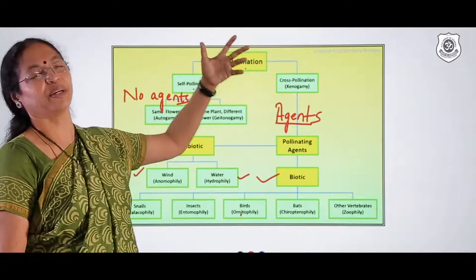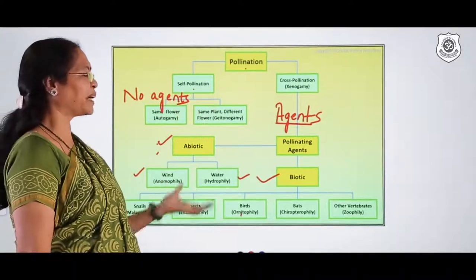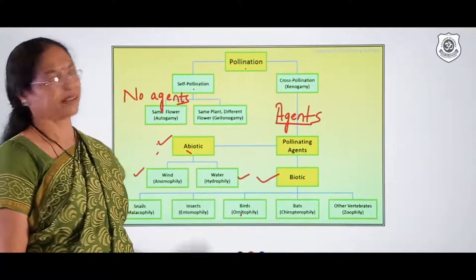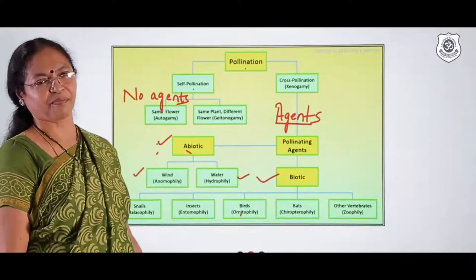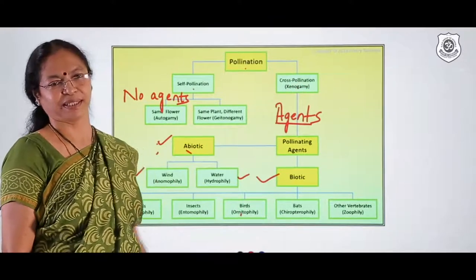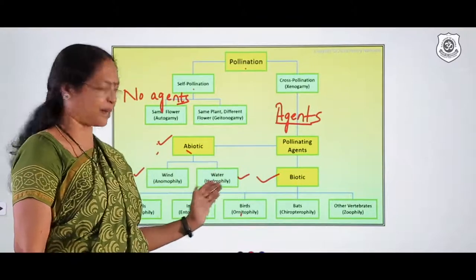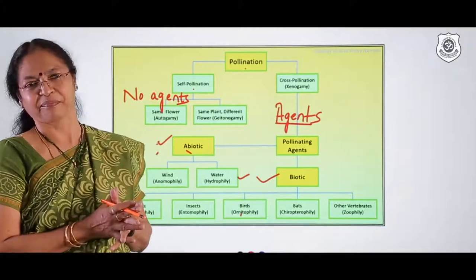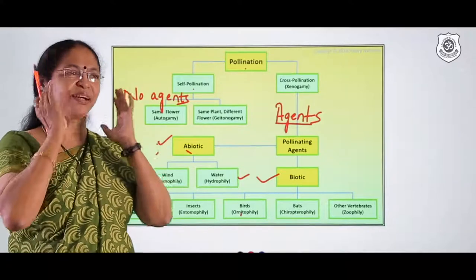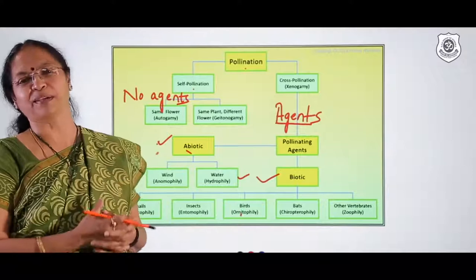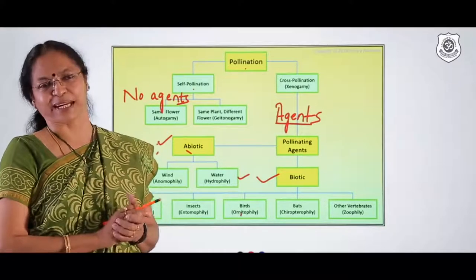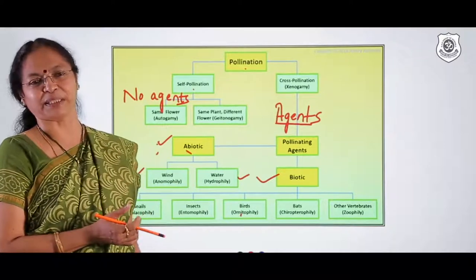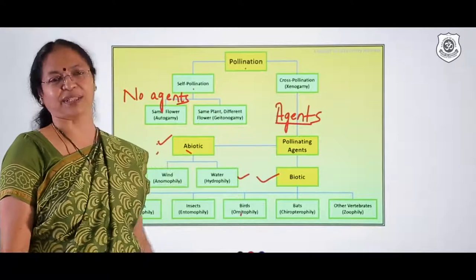One important question: why are large numbers of pollen grains produced in wind-pollinated plants? Because wind blows in any direction, there is a lot of wastage, and so a very large number of pollen grains are produced to compensate. In biotic pollination, the number of pollen grains produced is always comparatively lesser.